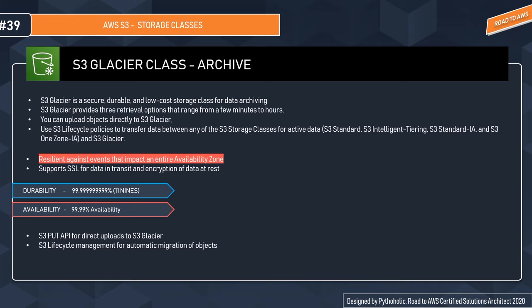S3 Glacier has a separate section in the AWS console and is not included in the standard S3 console — you must access it separately. You can reliably store any amount of data at costs competitive with or cheaper than on-premises solutions. S3 Glacier provides three retrieval options ranging from a few minutes to hours, with cost varying based on retrieval speed. It is designed for 11 nines durability across multiple availability zones and 99.99% availability over a given year.